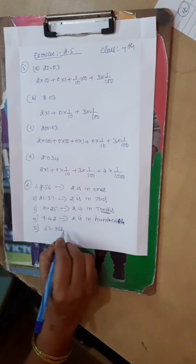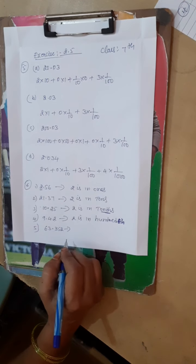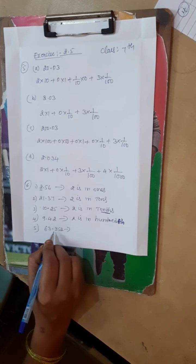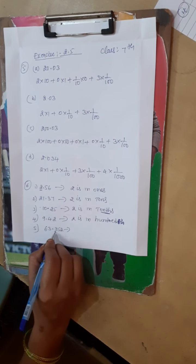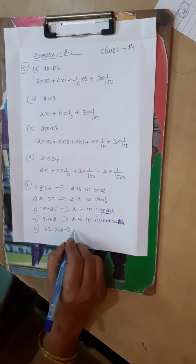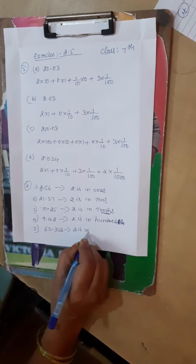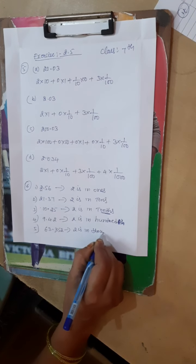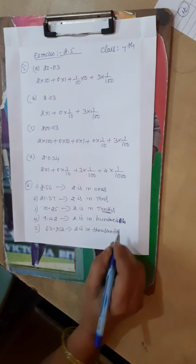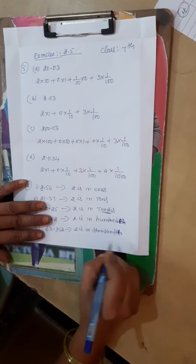63.352. Listen. It is tenths, hundredths, thousandths. So 2 is in thousandths, T-H-O-U-S-A-N-D-T-H.